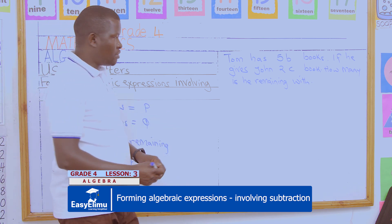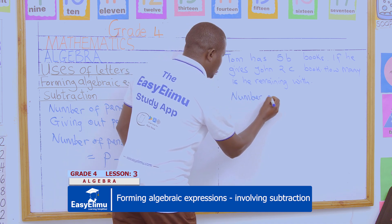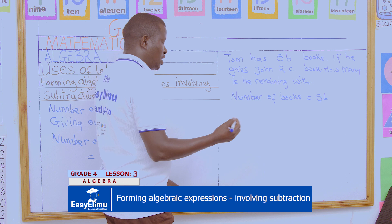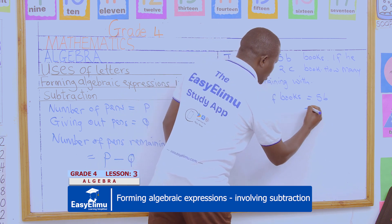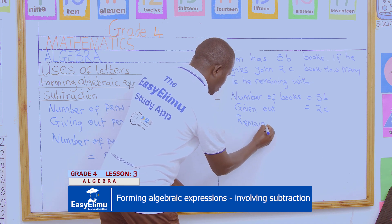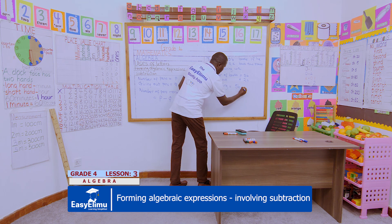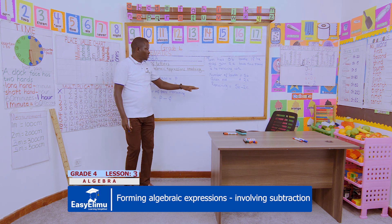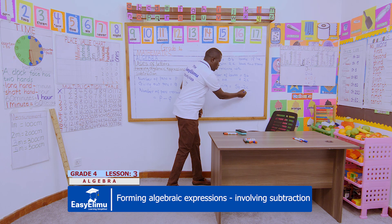Remember the total number of books that Tom had — the total number of books — is 5B. He gave out 2C. So the remaining will form an expression: 5B minus 2C. That is the remaining, and we call it an algebraic expression. Because we do not know the value of B and C, we leave it at this point — this becomes an algebraic expression involving subtraction.